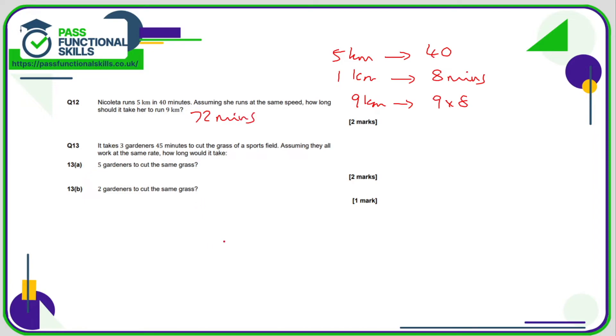Question number 13. We know that it takes three gardeners 45 minutes, and we want to work out how long it's going to take five gardeners. More gardeners means less time, but going from three to five is tricky, so we'll work out how long it's going to take one gardener. One gardener will take three times longer, so three times 45 is 135 minutes. If one gardener takes 135 minutes, then five gardeners will take five times less time, so 13a is 27 minutes. For part b, one gardener takes 135 minutes, so two gardeners will take half as much time, 135 divided by two, and that comes to 67.5 minutes.